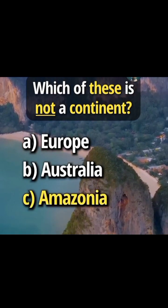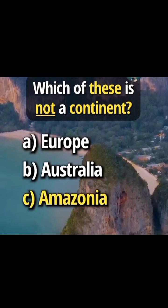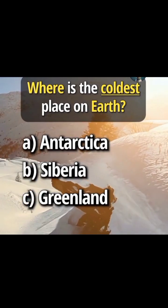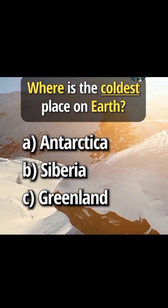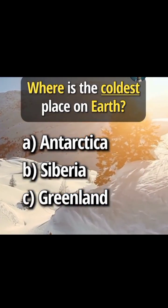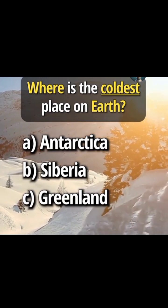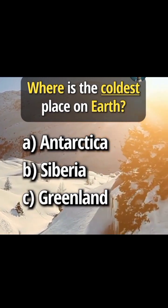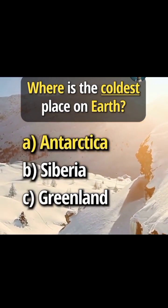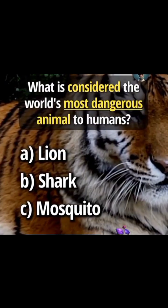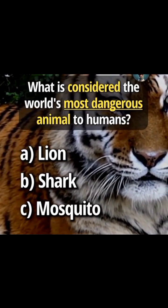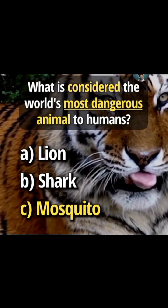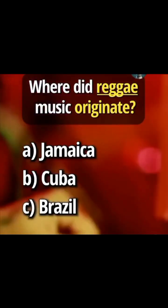Answer C: Amazon. Where is the coldest place on earth? Answer A: Antarctica. Answer C: mosquito. Where did reggae music originate?